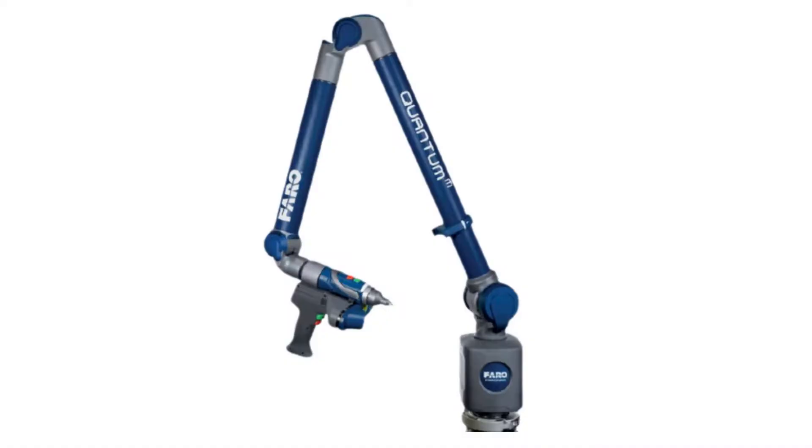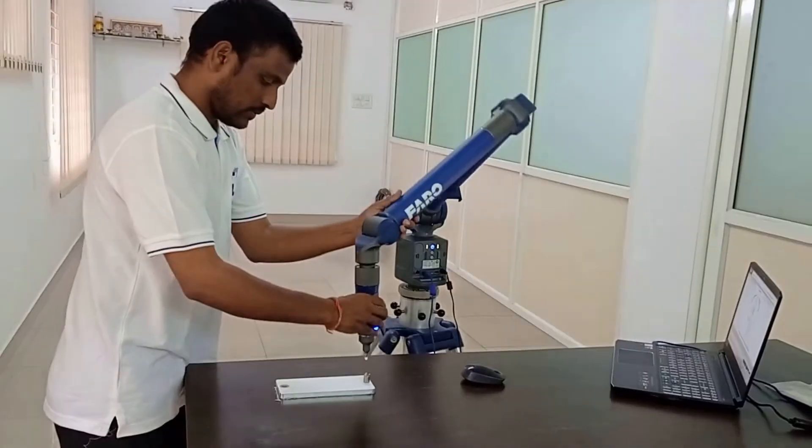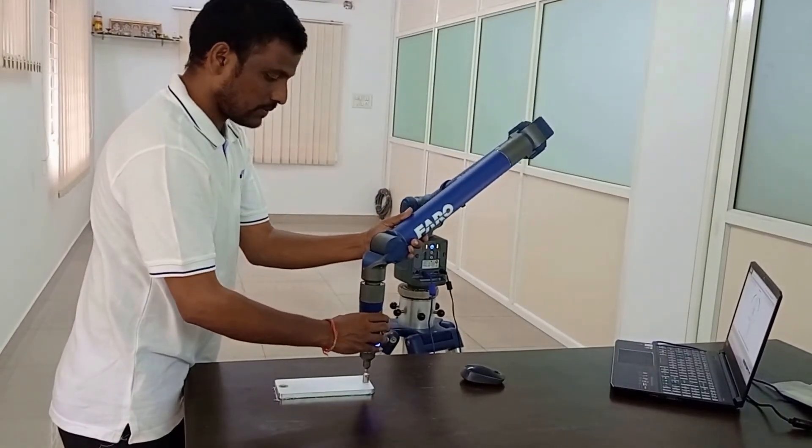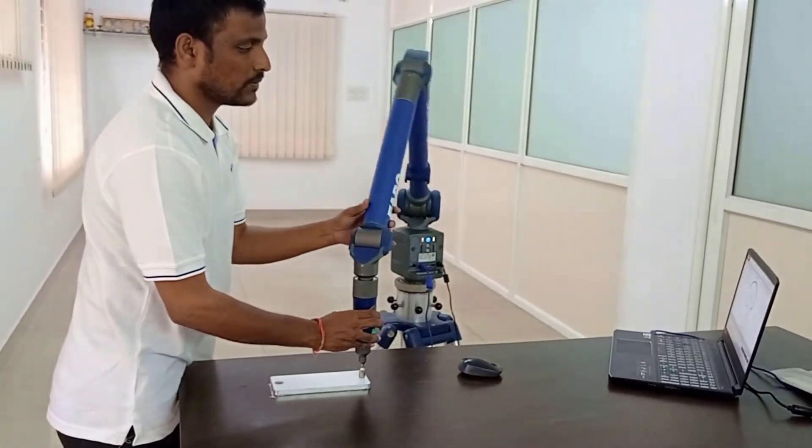Measurement arms are 3D measurement devices like the Faro arm developed in response to growing need for a probing solution that provided more portability and flexibility than a fixed CMM. So that is why probes are connected to the quantum arm and we are going to execute the inspection process.